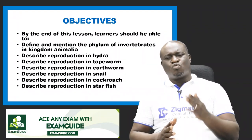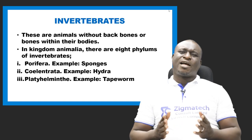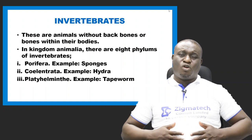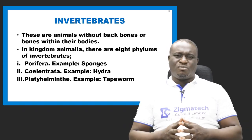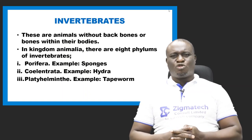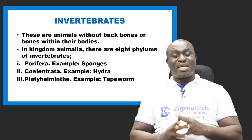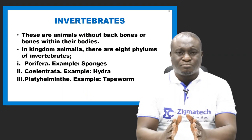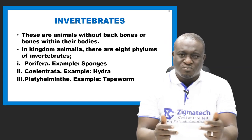Let's begin by looking at what an invertebrate is. Invertebrates are animals without backbones, or without bones in them. When we were looking at kingdom Animalia, there are about nine phyla. Out of those nine phyla, the first eight are invertebrates, while the ninth is Chordata. Chordata is a vertebrate.